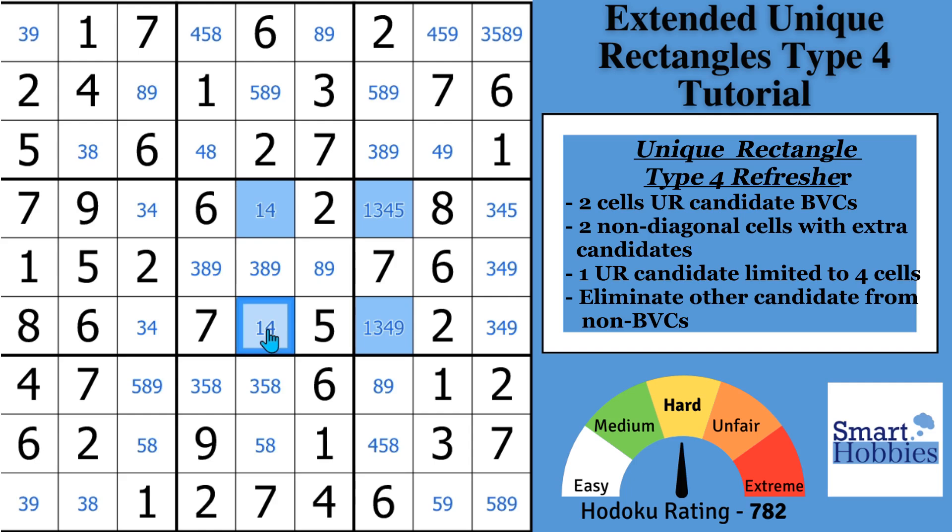So the 1 is the restricted candidate here that's going to make the unique rectangle Type 4 work. And what you can do is you can look in the cells that have extra candidates and you can remove the additional candidate, the other BVC candidate, from these two cells. So we have a 1-4 here. The ones are limited. What I'm saying, with unique rectangle Type 4, when you see this situation, you can remove the 4s from these two cells.